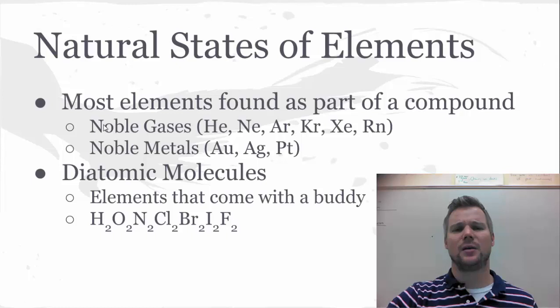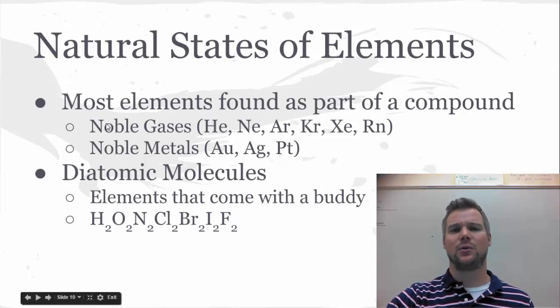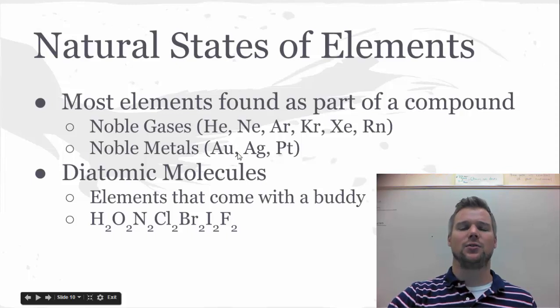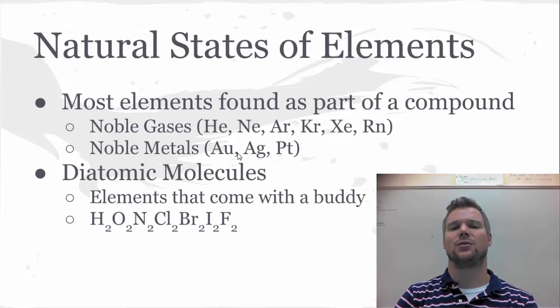Most atoms on the periodic table are found as part of compounds because atoms want to react to become more stable. But there's some atoms that don't form compounds that readily, specifically the noble gases and then the noble metals. Now, if you think about these metals, these are jewelry metals. And part of why they're really good for jewelry is because they don't react and they don't turn into something else when you're wearing them.